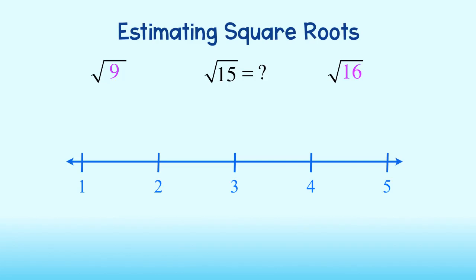We will plot these numbers on the number line to get as close an estimate as we can. The square root of 9 is equal to 3, so we can plot the square root of 9 here. The square root of 16 is equal to 4, so we plot it here on the number line. Since the square root of 15 comes after the square root of 9 but before the square root of 16, it must lie somewhere between 3 and 4.